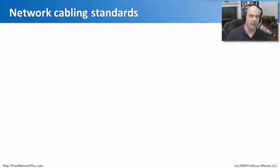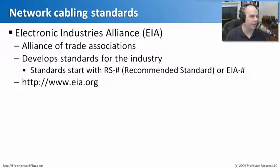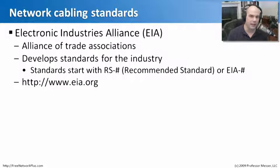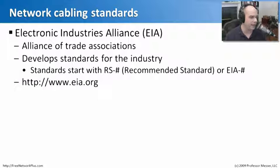Fortunately, there are a lot of standards in place for cabling, so you don't have to wonder if the cable you're putting in is going to work properly for the type of network you're implementing. One organization called the Electronic Industries Alliance — you'll see it abbreviated as EIA — is an alliance of trade organizations that got together to create standardizations for these underlying cables. That certainly helps all of these different trade associations implement and install things in a very standardized way.